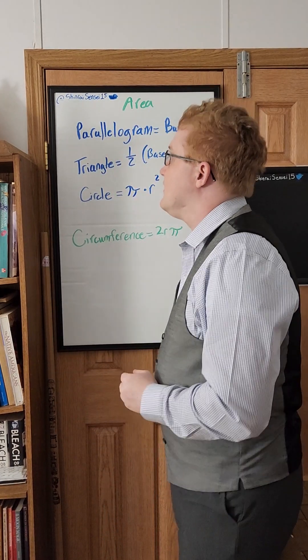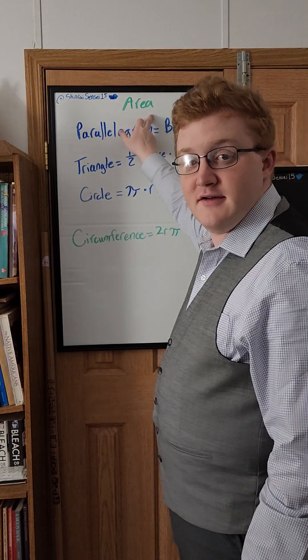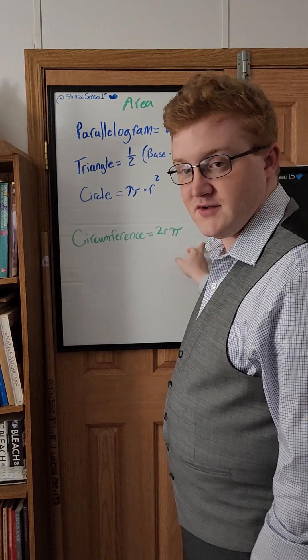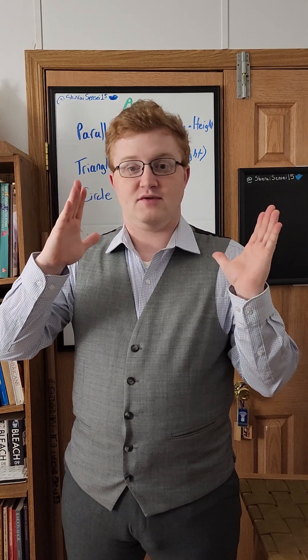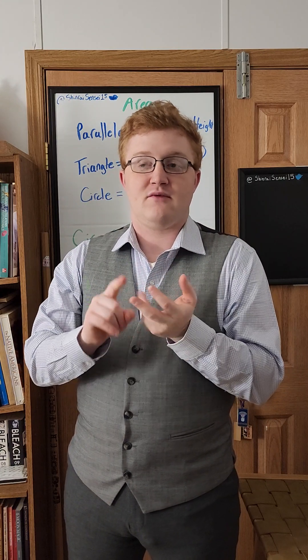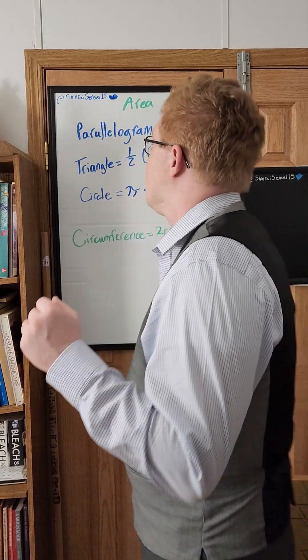So, three main formulas for finding the area, and then one formula for circles as well that is specific to circles. The area of a parallelogram—and a parallelogram is any shape that has two sets of parallel sides. So rectangles, squares, and rhombuses are parallelograms.